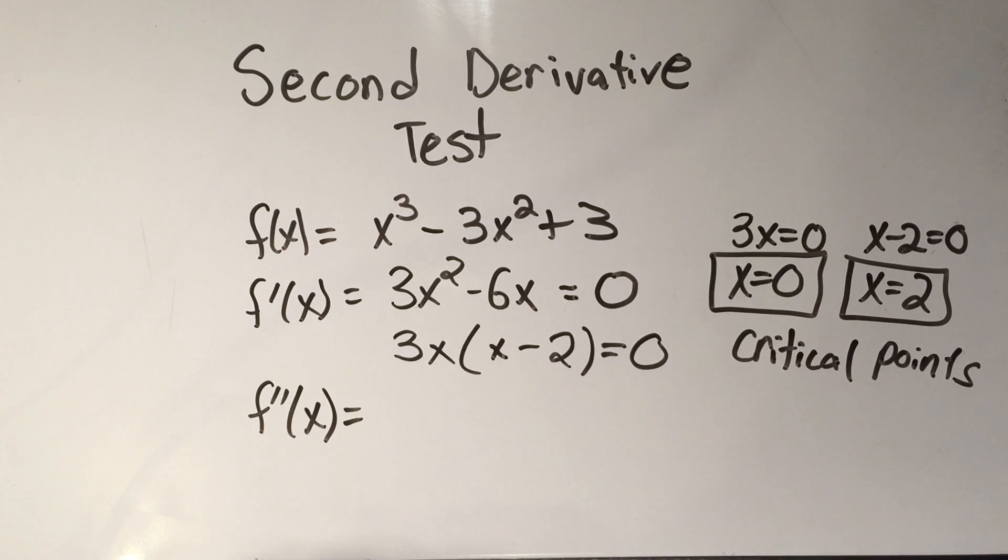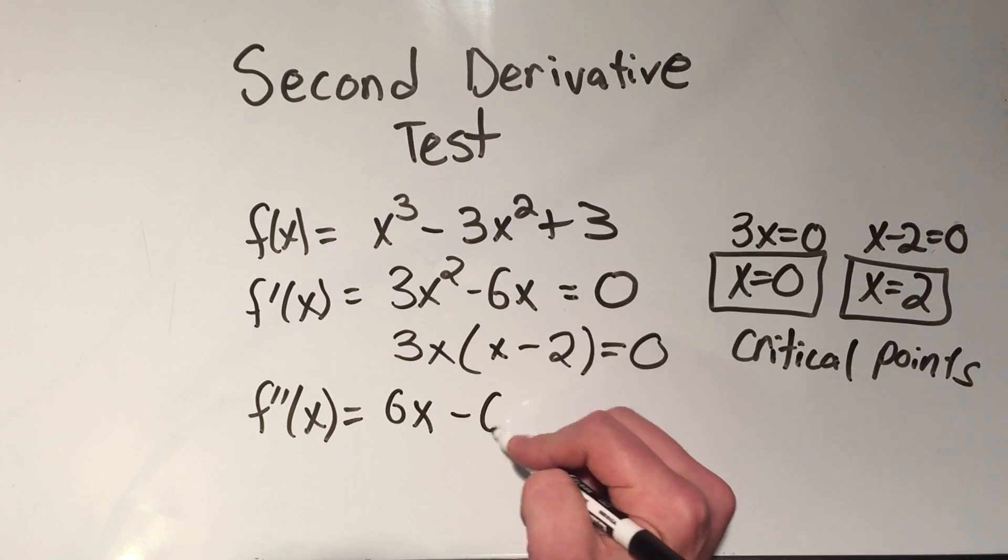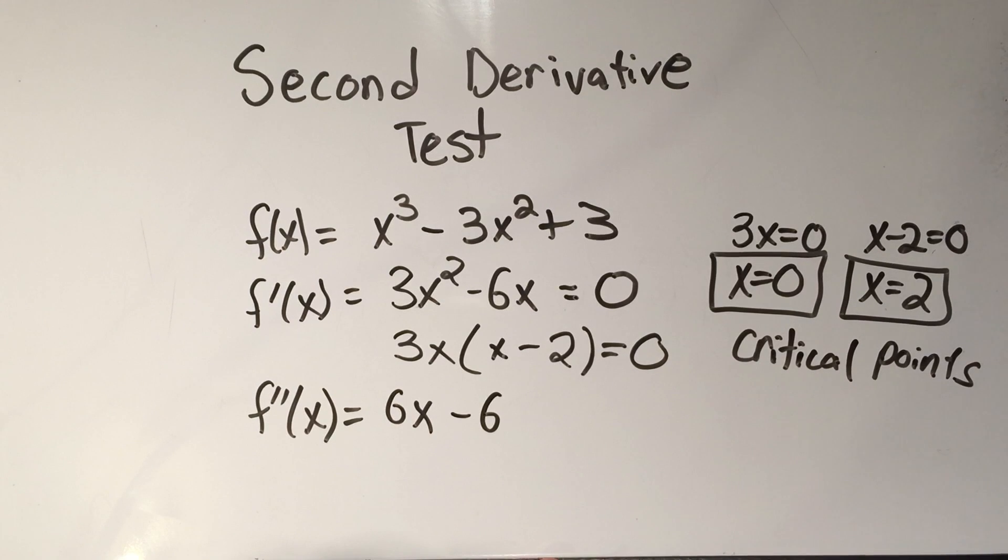So I'll take the derivative again, and it's another power rule. So I do 3 times 2 is 6, x to the first. The derivative of minus 6x is minus 6. And here's what I do.